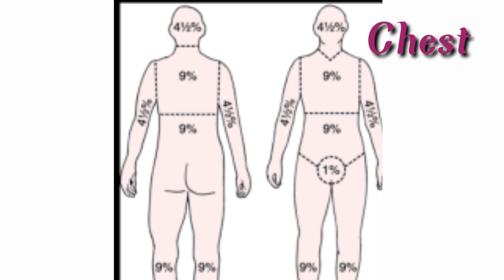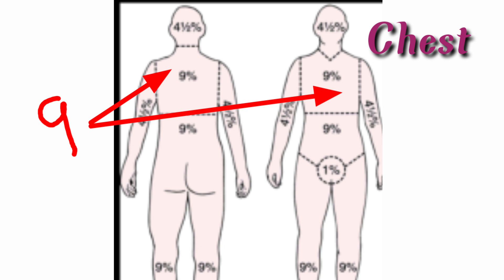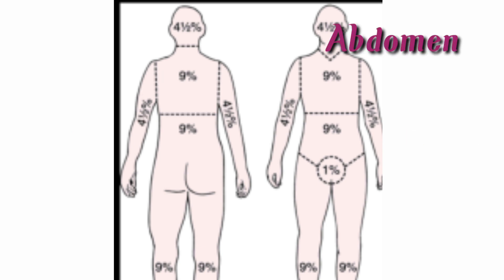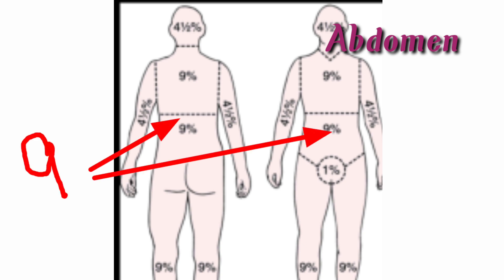Next is upper thorax or the chest area. The posterior part we can give 9% and the anterior part we can give 9%, so total will be 18%. Next is abdomen — same like chest, we can give 9% anterior and 9% posterior, so the total will be 18%.